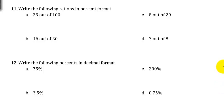Now we're going to go through some examples. We want to write all the following ratios in percent format. 35 out of 100 - we can do this right away because it's out of 100, so that would be 35%.